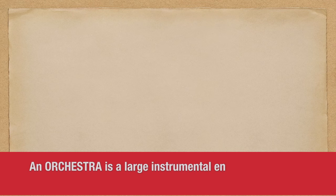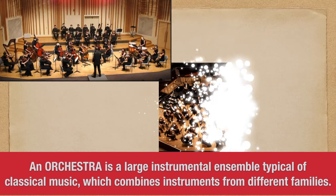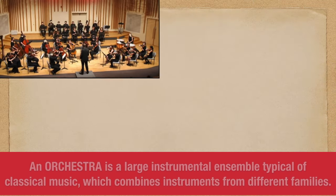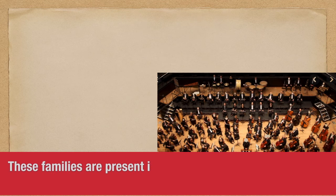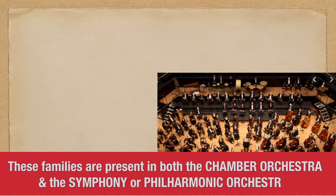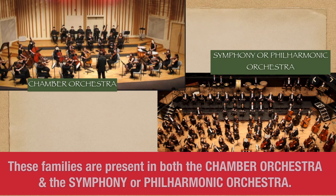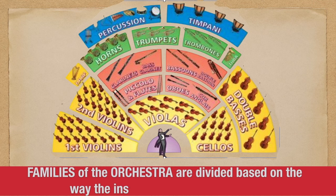An orchestra is a large instrumental ensemble, typical of classical music, which combines instruments from different families. These families are present in both the chamber orchestra and the symphony or philharmonic orchestra. Families of the orchestra are divided based on the way the instrument makes its sound.